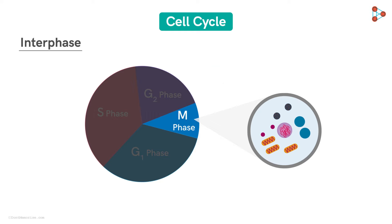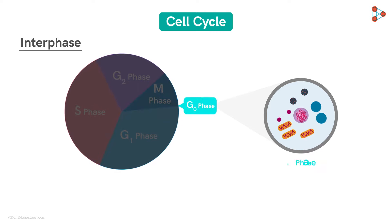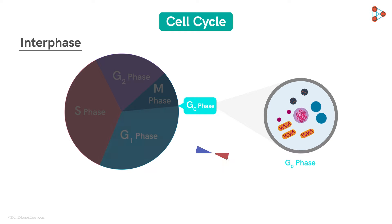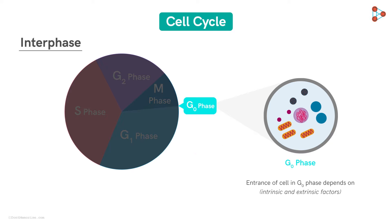Before moving to the M-Phase, there is one more intermediate phase to study — the G0 phase. This stage can be entered after the M-Phase of one cycle and before the G1 phase of the next cycle. The cells may enter the G0 phase or may directly enter the G1 phase after cell division. Several intrinsic and extrinsic factors, like resource availability or nutritional deprivation, can force the cell to enter this G0 phase.